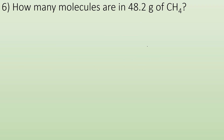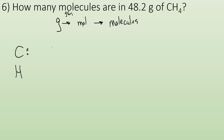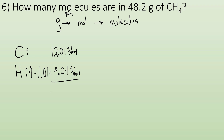Problem 6: how many molecules are in 48.2 grams of CH4? From grams I can get moles, and from moles I can use Avogadro's number to get molecules. The gram formula mass of CH4: one carbon at 12.01, plus four hydrogens at 1.01 each giving 4.04, totals 16.05 grams per mole.